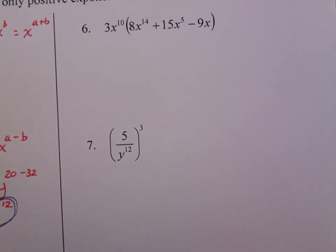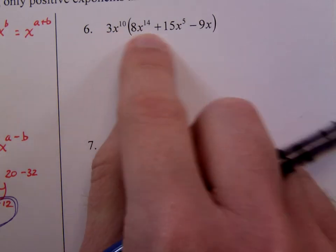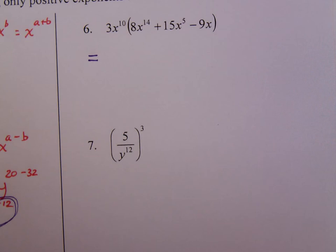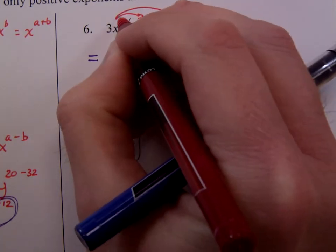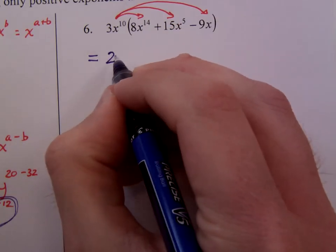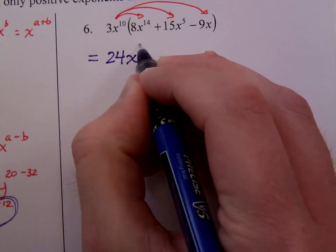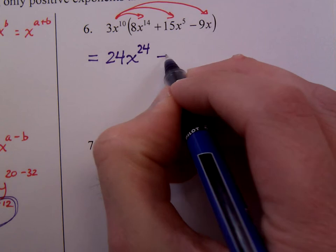Now to number 6. In number 6, we recognize that this is just an exercise in multiplication. We've already done factoring as a review, so this should be nice and easy for us. Just distribute and be very careful. So 3 times 8 is 24. x to the 10th and x to the 14th, you're going to add those powers. You get x to the 24th.